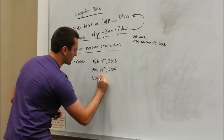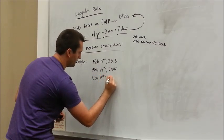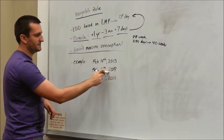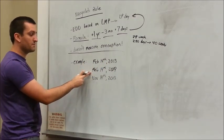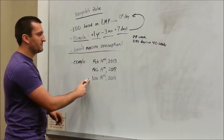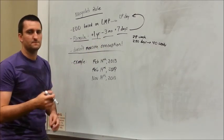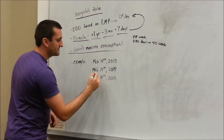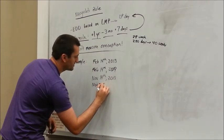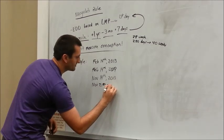So November 14th, 2013. Because I just transitioned from 2013 to 2014, I subtracted three months, now I'm back in 2013 again. But now we get November, subtracted three months. Now we need to add seven days. So we're at November 21st, 2013.